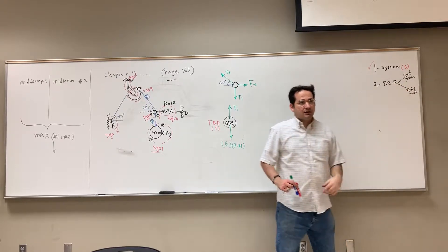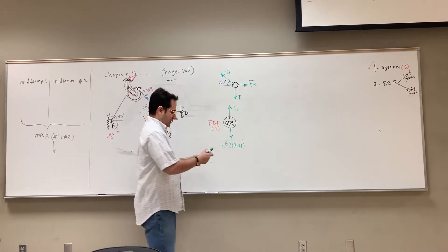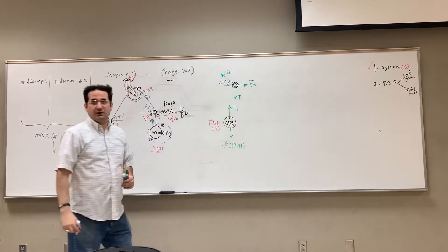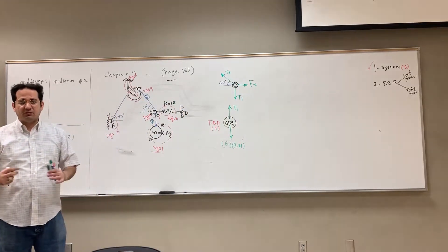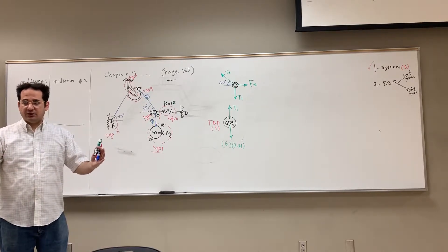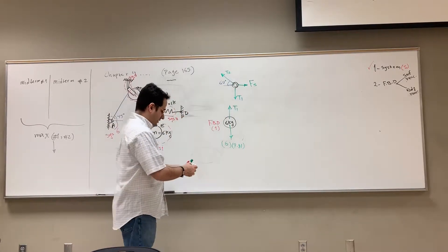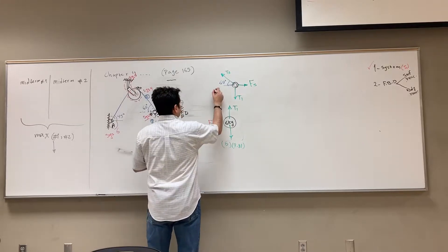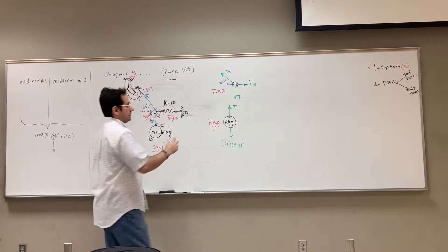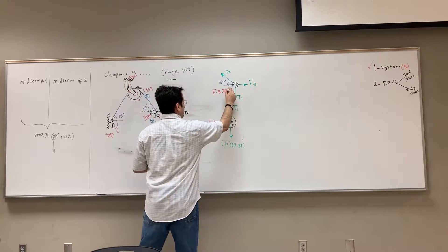Now body forces for system two: the ring's mass is almost zero, so the body force is zero. That's it — this is FBD two for system two.